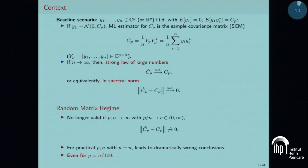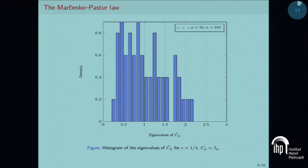We cannot say much about Ĉ_p itself, but we can say a great deal about its spectral properties — in particular its eigenvalues. And that's how random matrix theory started back in the 1970s: we can specify what the eigenvalue distribution of Ĉ_p will do.